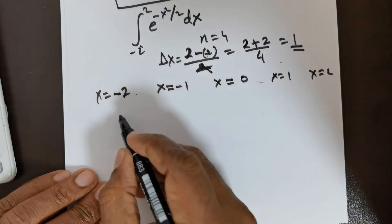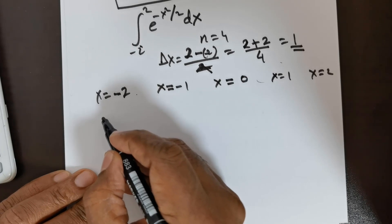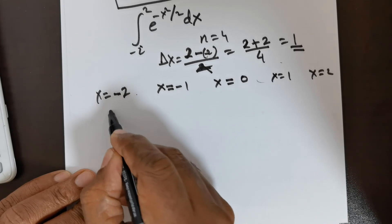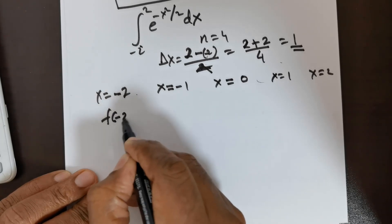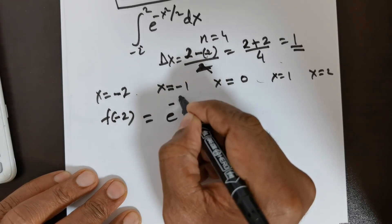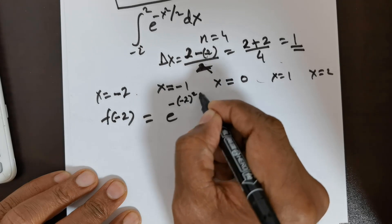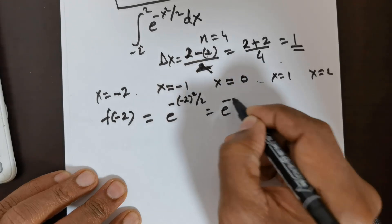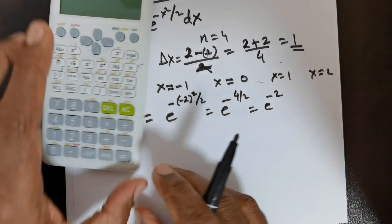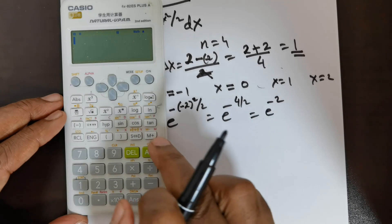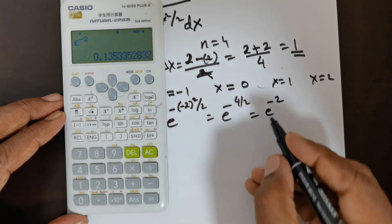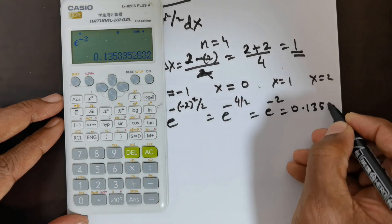Now I need to find the functional value at each of these points. So f(−2) is e raised to the power of negative x squared divided by 2, evaluated at x = −2. That gives e raised to the power of negative 4 divided by 2, which is e raised to the power of negative 2. And e to the power of negative 2 has a value of 0.1353.